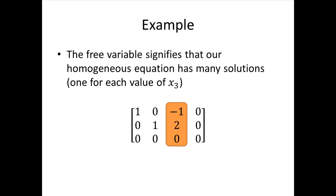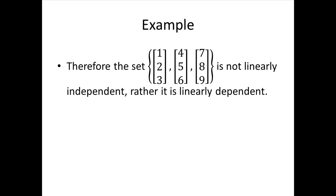Since we have a free variable, that tells us that our homogeneous equation has many solutions, in fact, one solution for each value of x3. So that tells us that the set of vectors we were looking at is not linearly independent. In fact, it's linearly dependent.